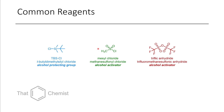The next compound I want to talk about is mesyl chloride. Similar to tosyl chloride, which we talked about last time, mesyl chloride is a convenient liquid. You can install this onto an alcohol to make it a good leaving group — something we're going to talk about as the main topic today.